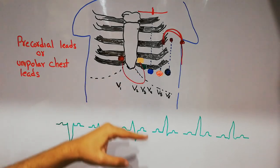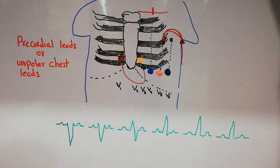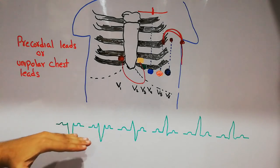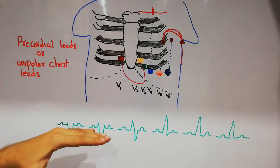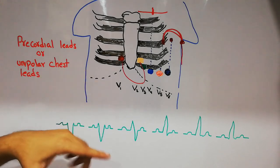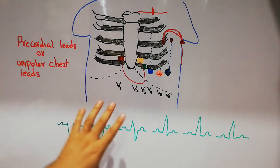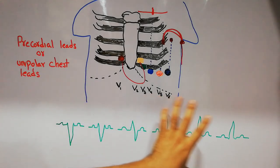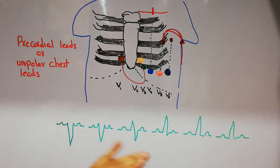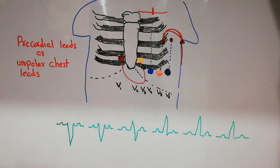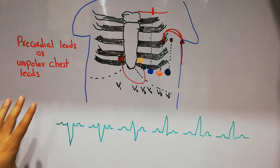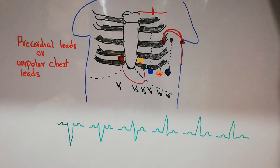V3 shows equal positive and negative deflection because V1 and V2 are present slightly above the cavity of the heart, looking at the heart from above. The fourth, fifth, and sixth chest leads show positive deflection. That's all about the unipolar chest leads and their placement areas. Thanks for watching the video.